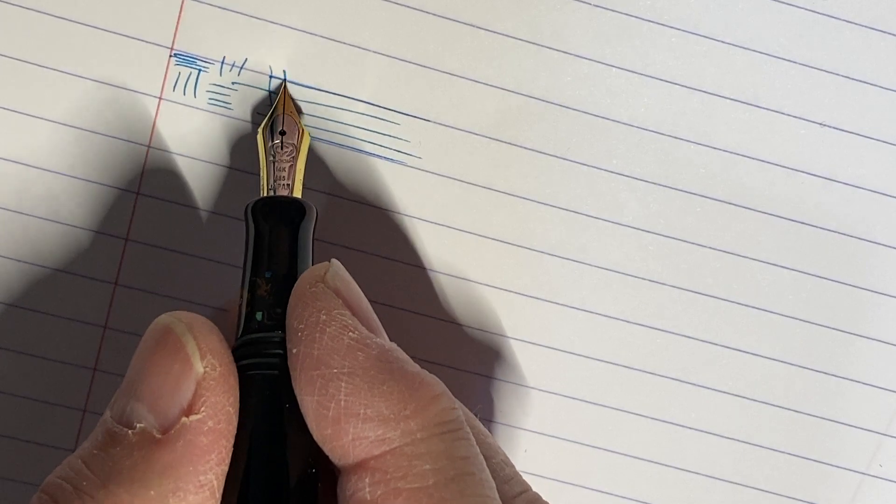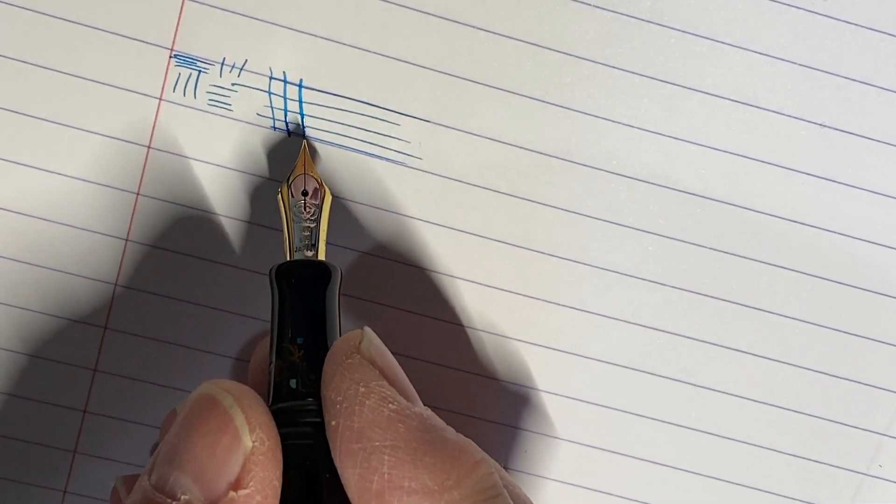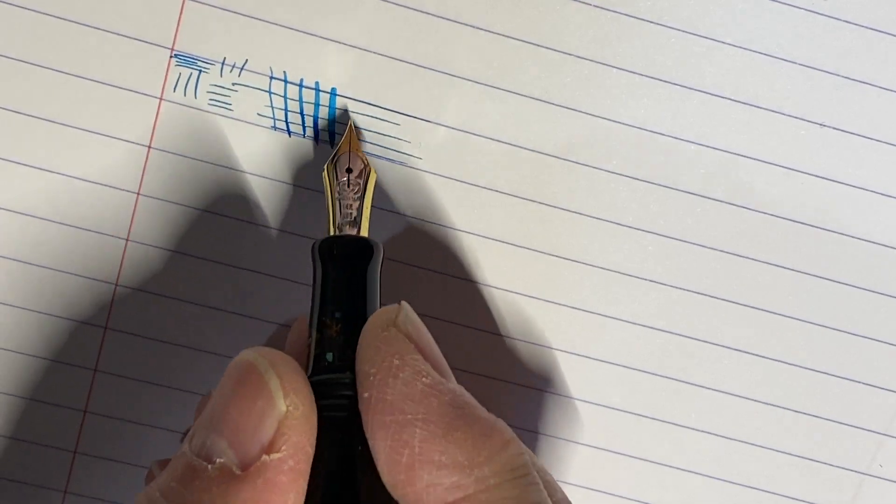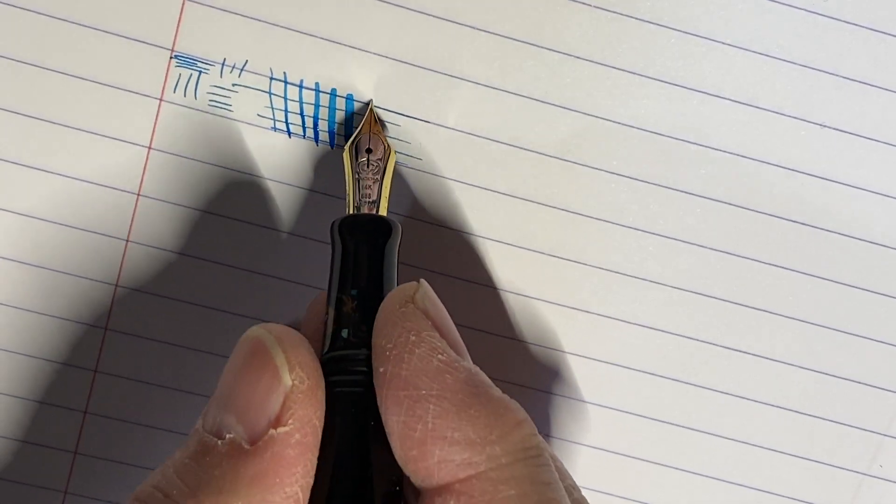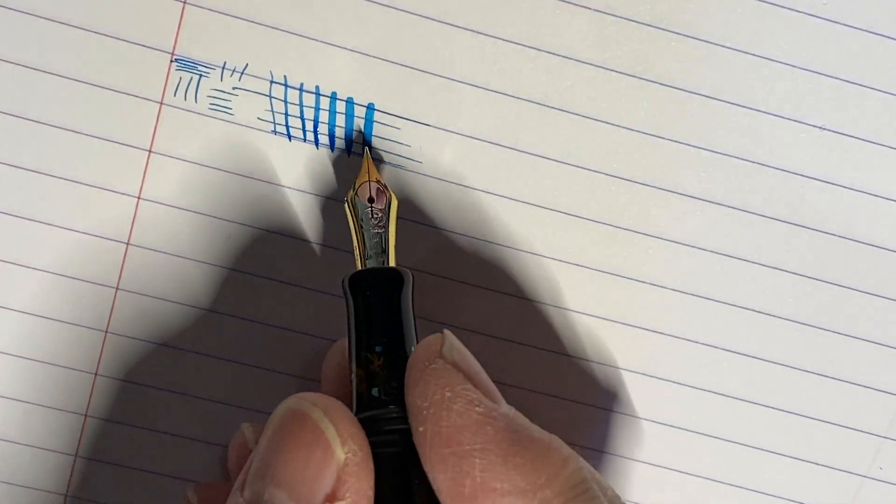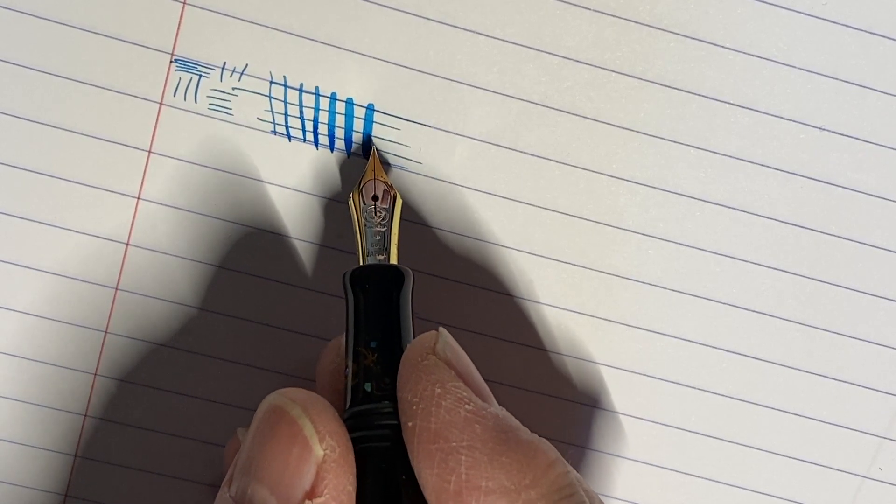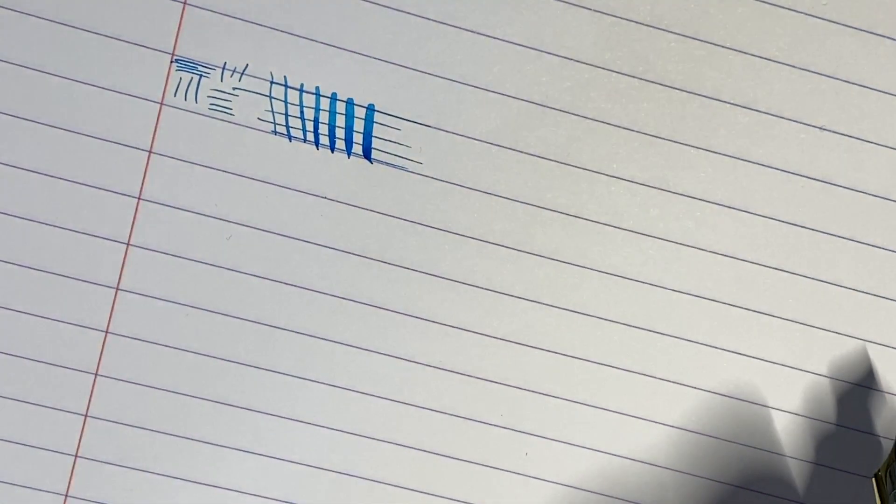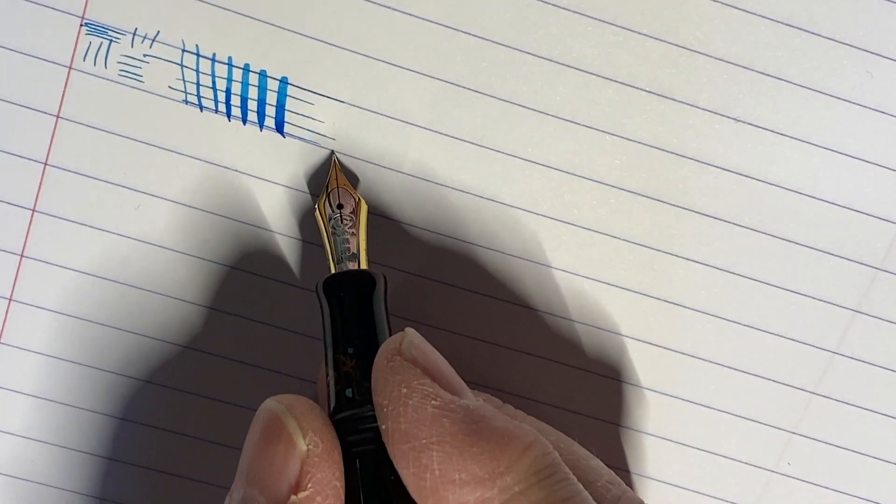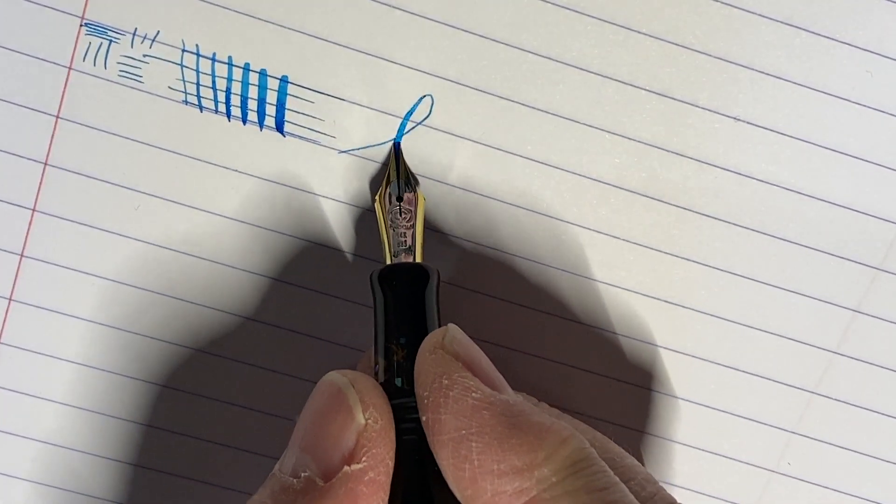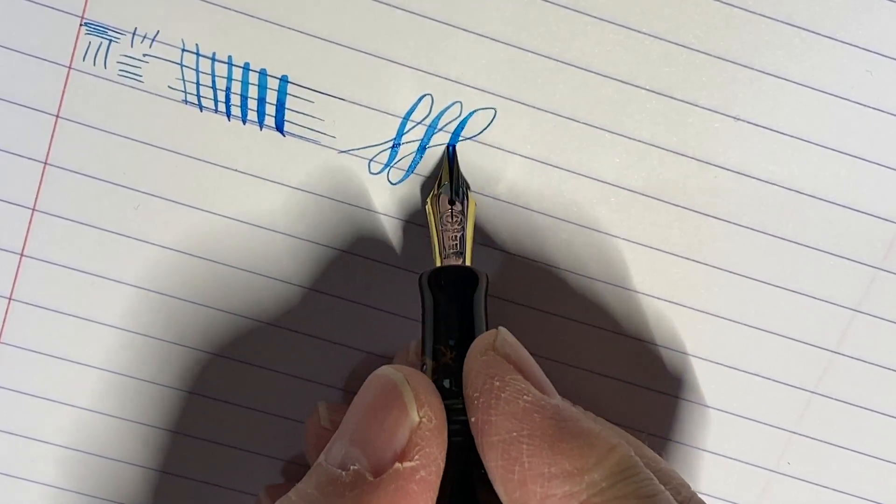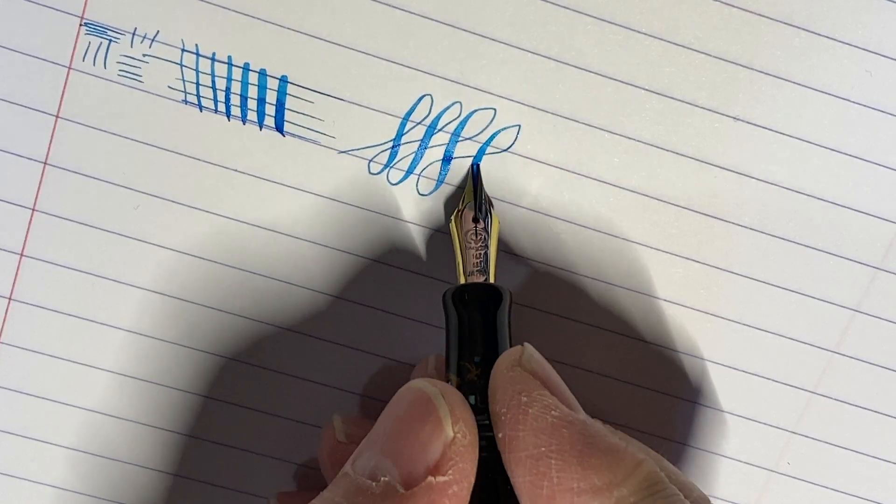I'll try a little bit more pressure, a little bit more pressure. I probably don't want to go too much further than that, but that's definitely in between double broad, triple broad, something like that. And you can get really nice line variation.